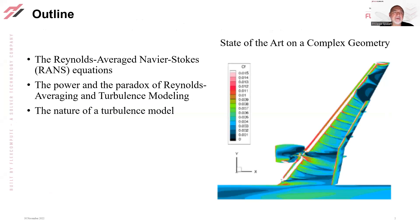The outline covers three topics: explaining the Reynolds-Averaged Navier-Stokes (RANS) equations starting from scratch, the power and what I call the paradox of Reynolds-Averaging and turbulence modeling, and then the intellectual nature of a turbulence model.